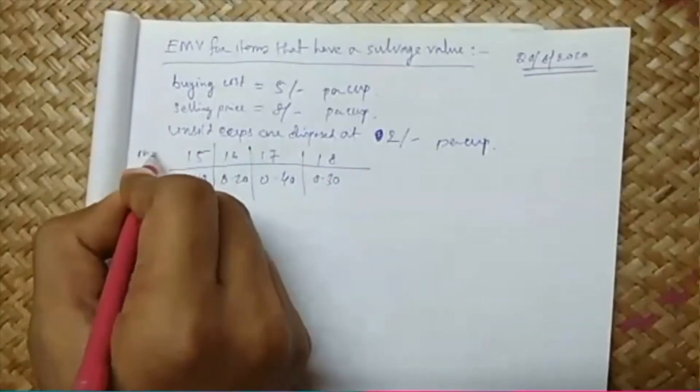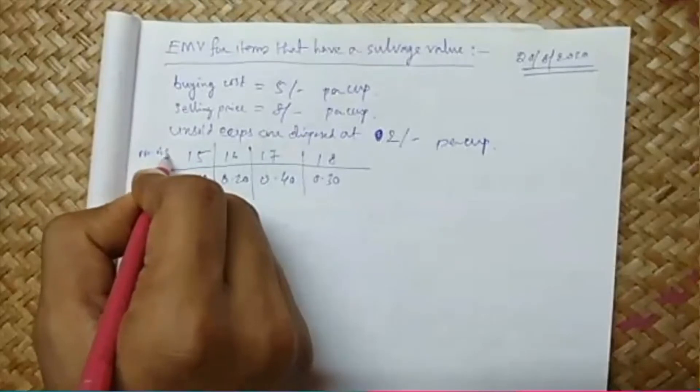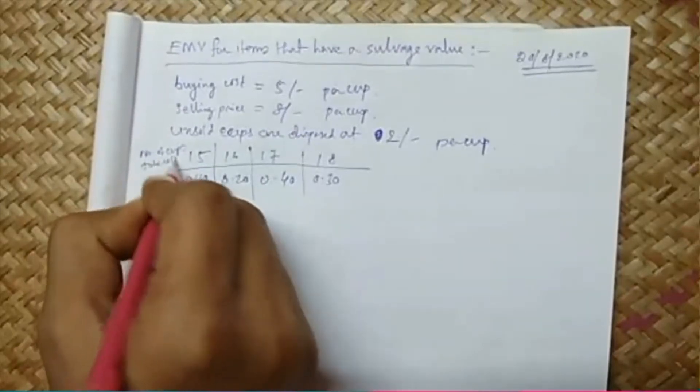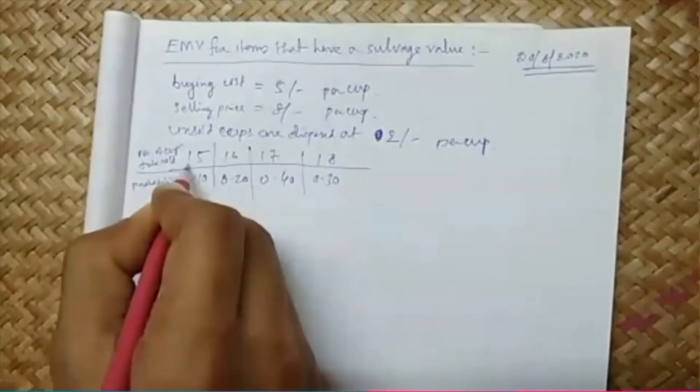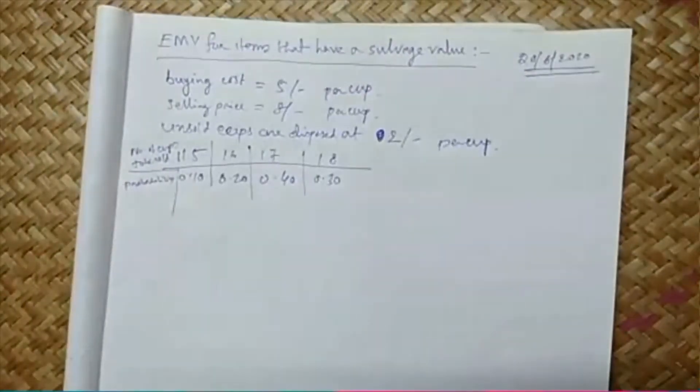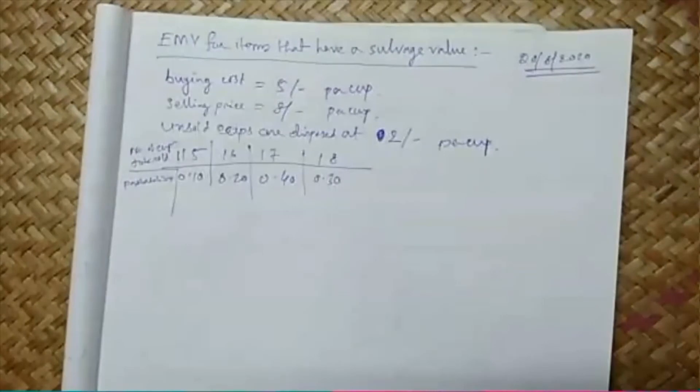There is no reason to believe that the sales volume will take on any other magnitude in future. So the sales will remain between 15 to 18. Find the EMV if the sale history has the following probabilities.